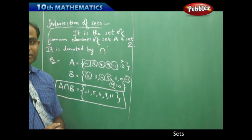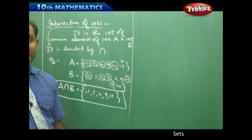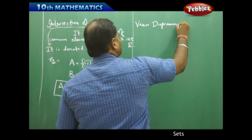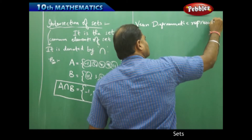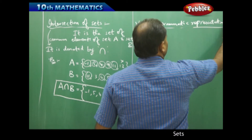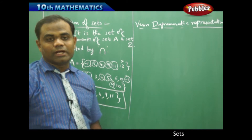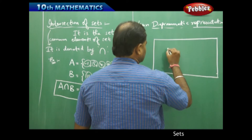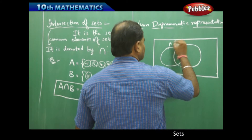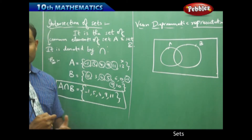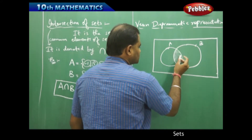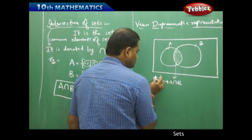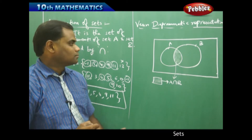Now, how do we understand this diagrammatically through Venn diagram representation? In Venn diagram representation we start with a rectangle for the universal set, and then sets A and B are the two circles considered inside the universal set. Intersection is the region which is common between A and B — this region is called A intersection B, denoted by the shaded region.